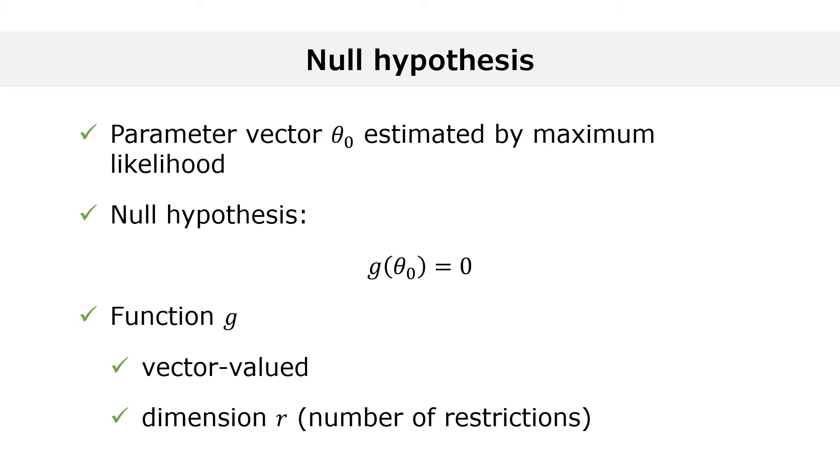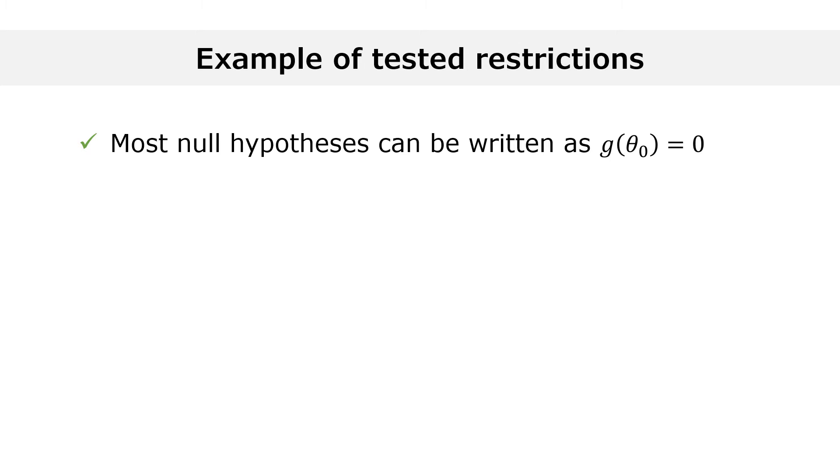We test the hypothesis that the true parameter theta zero satisfies all the r equations simultaneously. The majority of commonly tested null hypotheses can be written in the form g of theta zero equals zero.